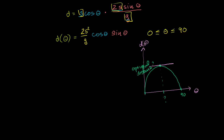What we need to do is take the derivative of this function, and then figure out at what angle the derivative, or the instantaneous slope of this function, is equal to 0. Then we're done — we will know the optimal angle to shoot the object at. So let's take the derivative. We'll use our derivative rules here. We're assuming that s and g are constants, so we can put them out front.